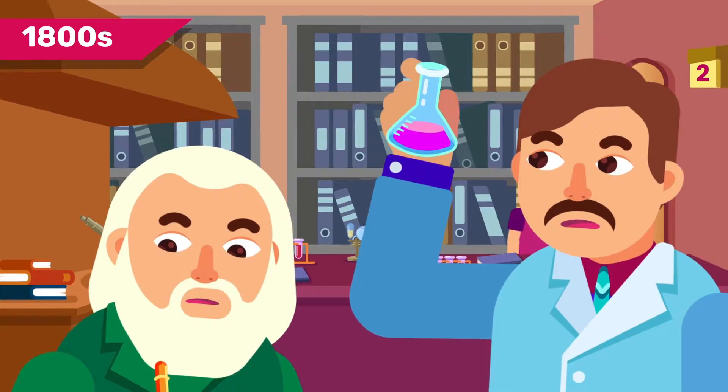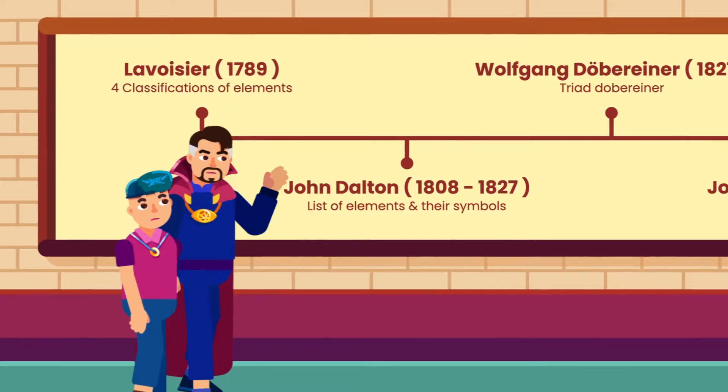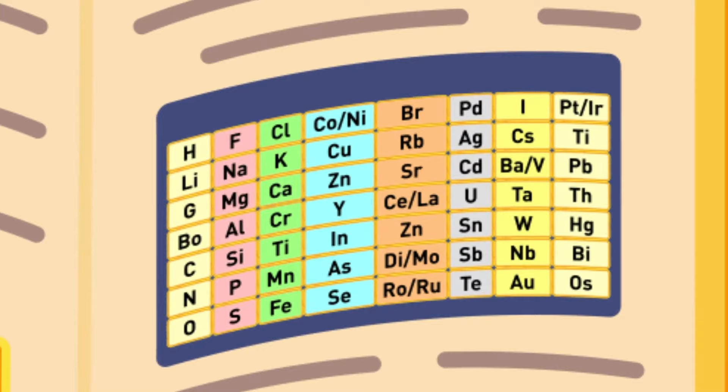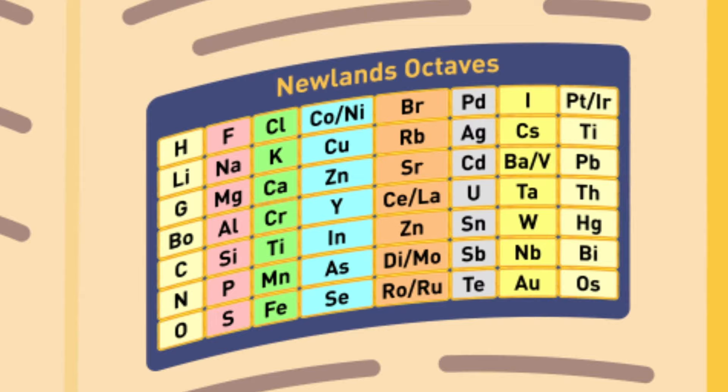Since the 1800s, lots of chemists have tried to find the best way to organize the elements. Originally, there were a lot of different ideas, including from Lavoisier, Dalton, Dobereiner, and Newlands. John Newlands thought the elements should be organized based on their atomic mass. He found that elements with similar properties ended up at regular intervals, and therefore divided the elements into seven groups of eight, then called this the law of octaves.